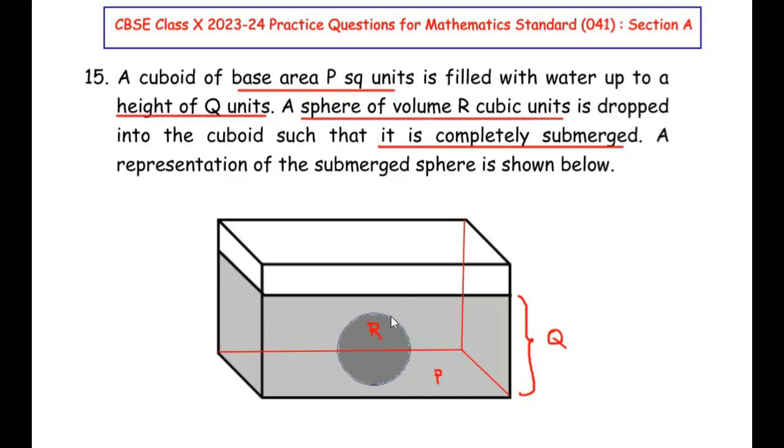Now let us imagine initially that the sphere is not inside the cuboid. We have not put any sphere inside. So at that time the volume of the water will be equal to the volume of the cuboid because water takes the shape of the container.